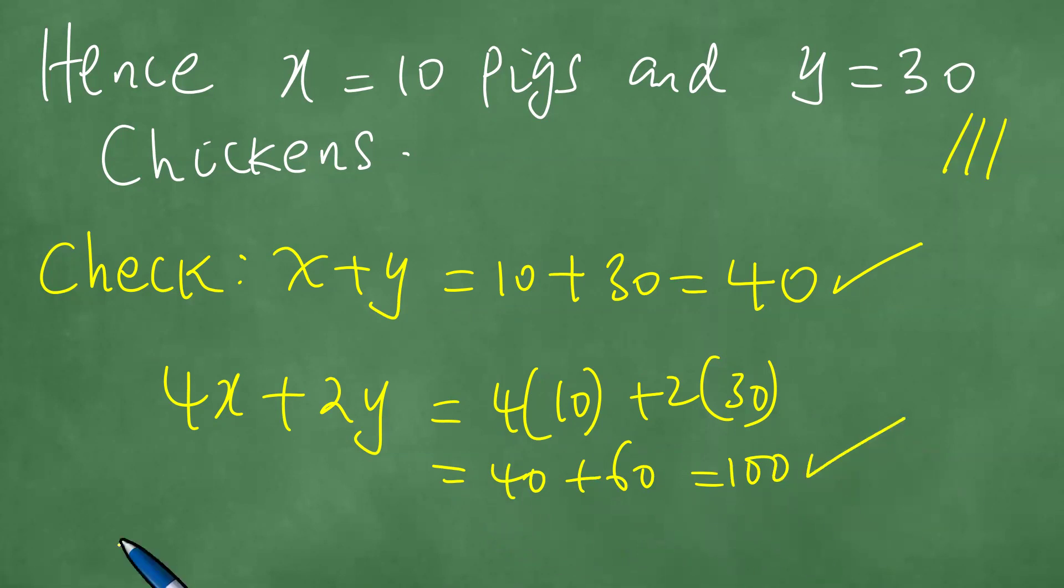And we counted, therefore, a total of 100 legs and a total of 40 pigs and chickens in the farmyard.